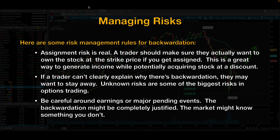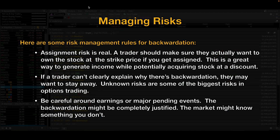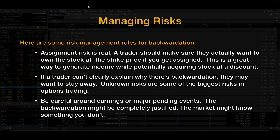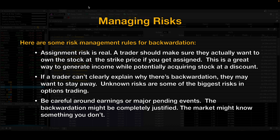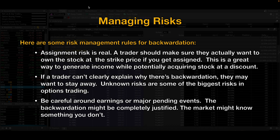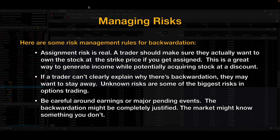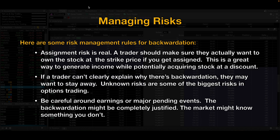Now let's talk about managing risks. Here are some risk management rules I like to use for backwardation. Remember, assignment risk is real — a trader should make sure they actually want to own the stock at the strike price if assigned. If a trader can't clearly explain why there's backwardation, they may want to stay away. Unknown risks are some of the biggest risks in options trading. And be careful around earnings or major pending events — the backwardation might be completely justified, and the market might know something that you don't.